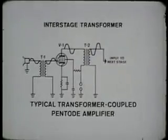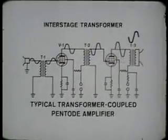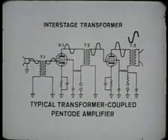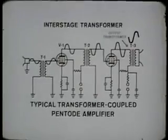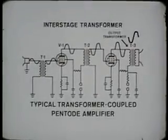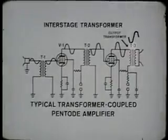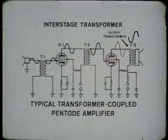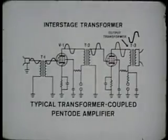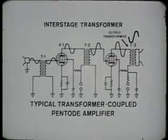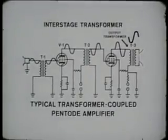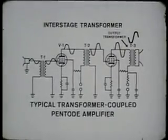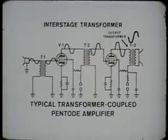When the transformer is used in the final stage to couple the output to the device which will reproduce the sound, it is called an output transformer. Usually an output transformer has a step-down ratio because by reducing the output voltages, the current is increased to the larger values required by the load. It also serves to match the generally high impedance of the power amplifier to the commonly low impedance of the output device.